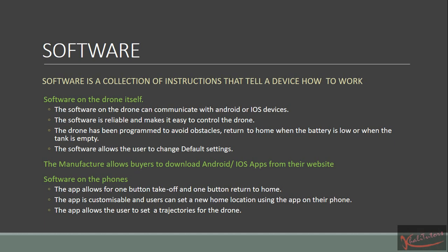The drone can return to home when the battery is low, and this is done by the software. It can also return when the tank is empty — sensors check if there is still water in the tank, or in some cases measure the weight to determine this. By 'home' we mean the starting position — where the drone started on the ground before going up. The software allows the user to change default settings, so you can always update your home location since it will vary depending on where you're operating the drone.